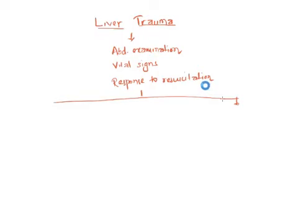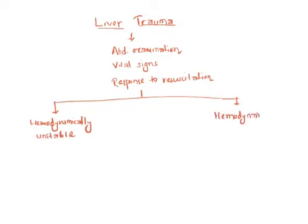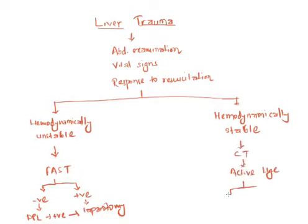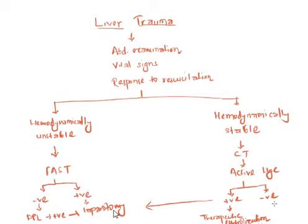If the response to resuscitation is good, we can depend on conservative management. But if the response is not good, we should undergo laparotomy. If the patient is hemodynamically unstable, we perform a FAST — focused assessment with sonography for trauma. If positive, we perform laparotomy; if negative, we do DPL (diagnostic peritoneal lavage), and if that is positive, we perform laparotomy. For the hemodynamically stable patient, we perform CT. If there is active hemorrhage, we do therapeutic embolization or laparotomy. If negative, we observe and perform repeated CT scans.